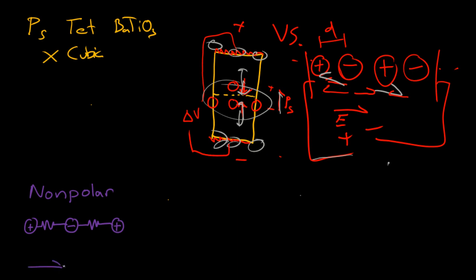If you apply an electric field — positive and negative — the positive atoms are going one way and the negative atoms are going the other. So one side is getting compression and the other is getting tension — this undergoes compression, this undergoes tension.